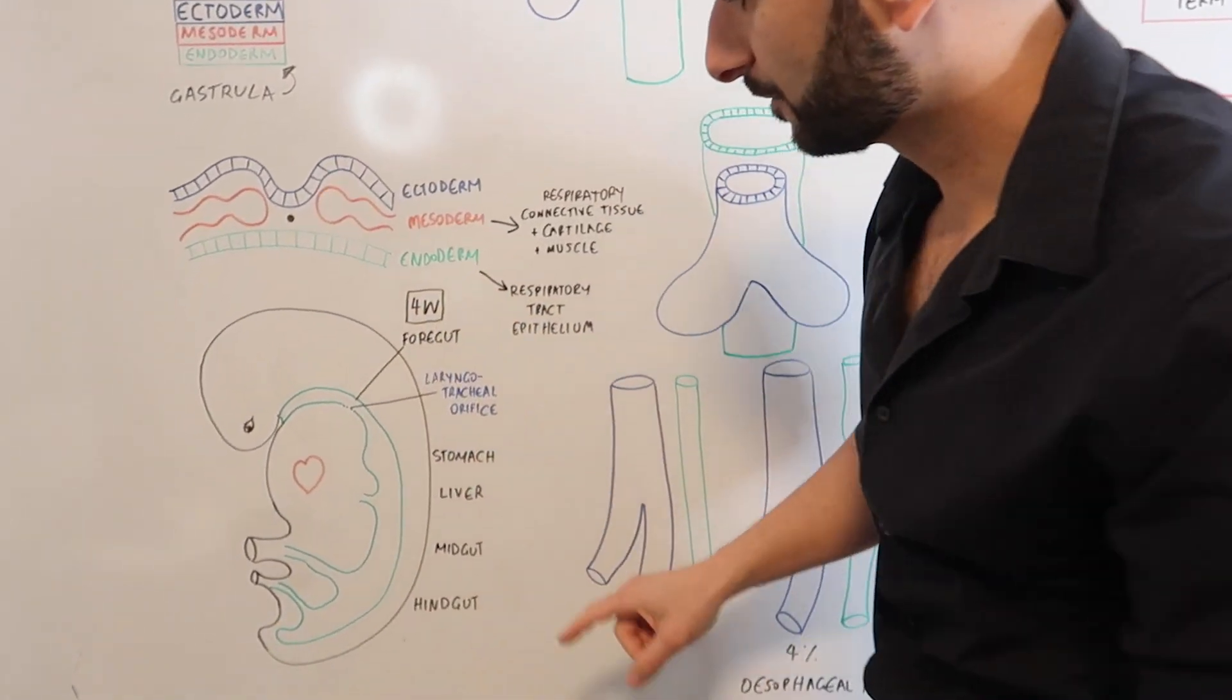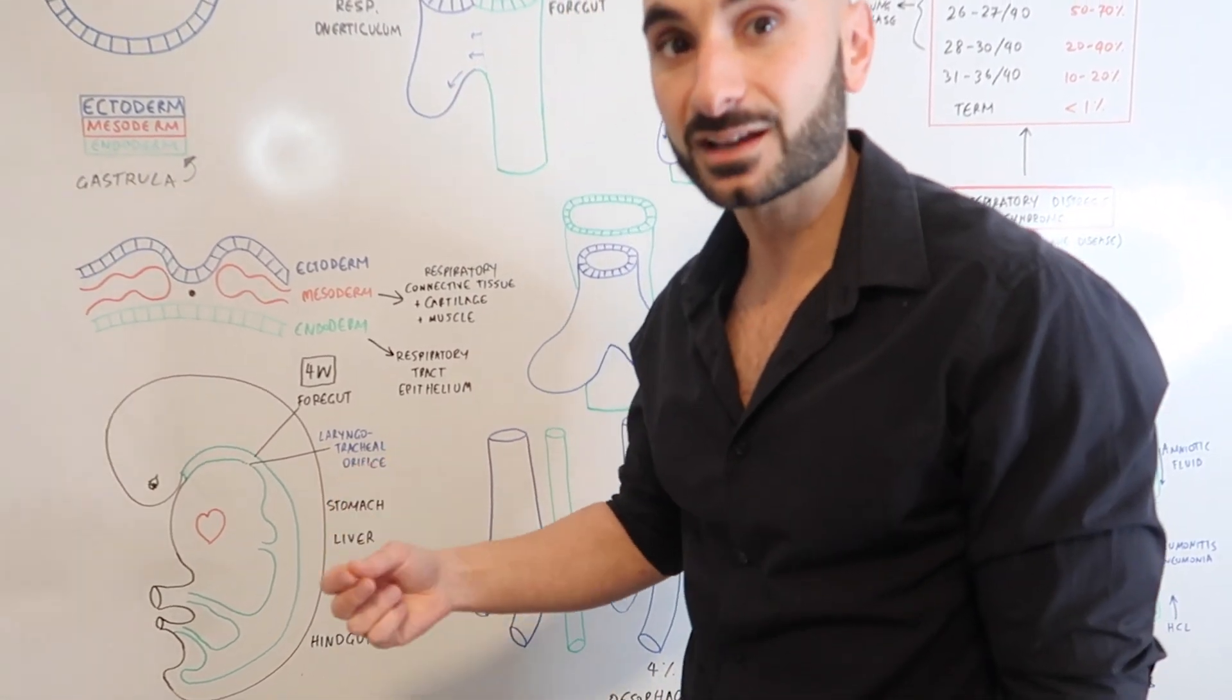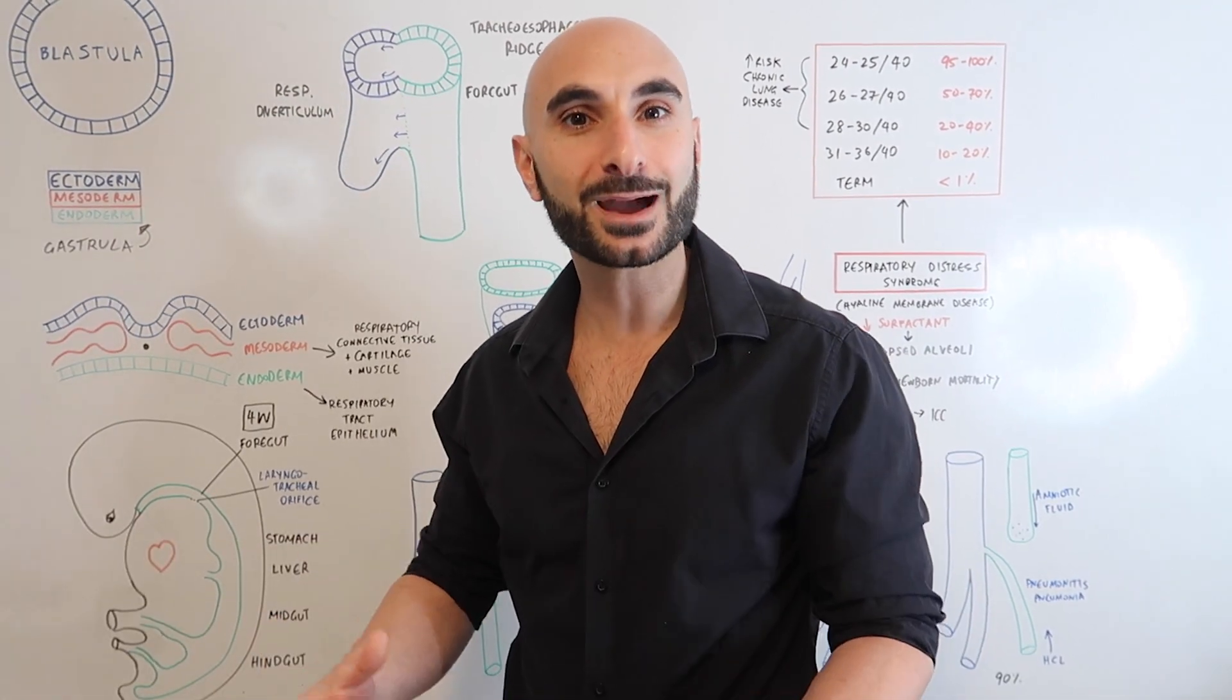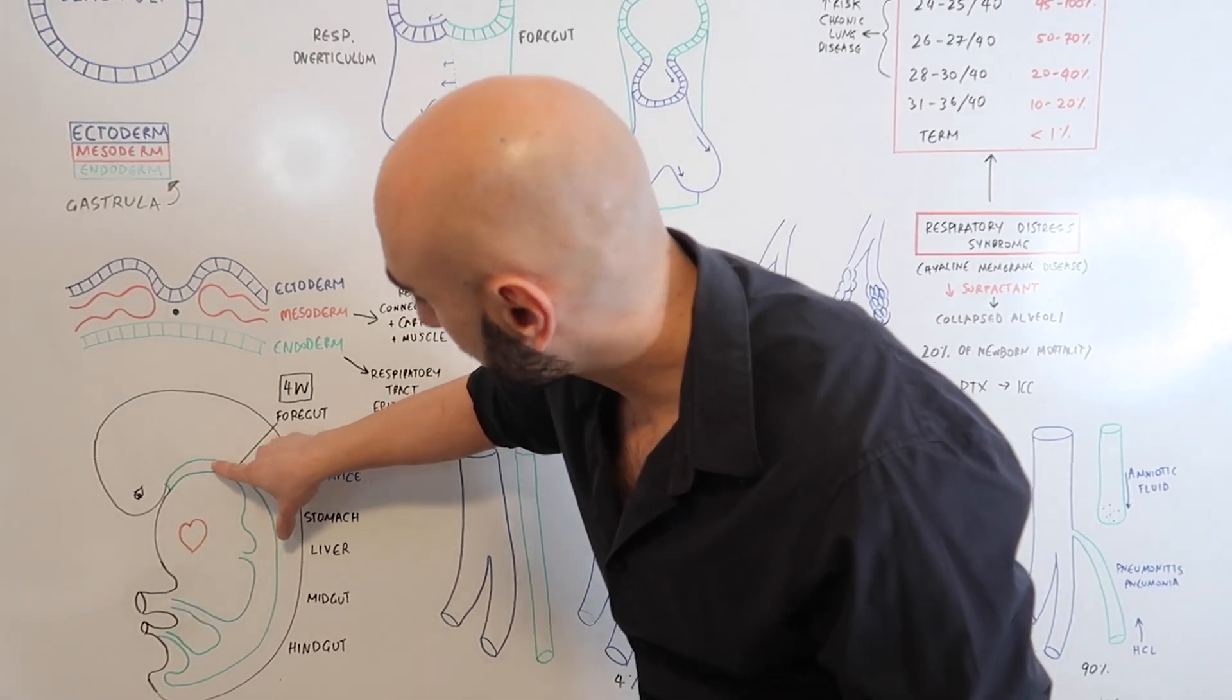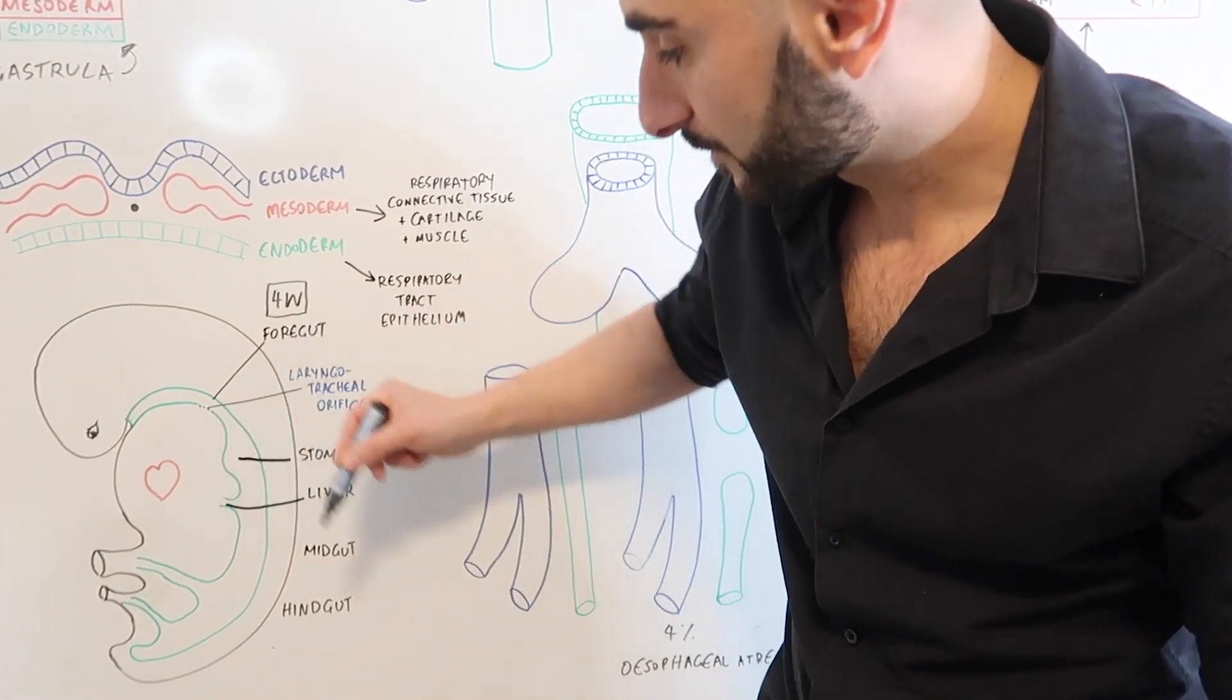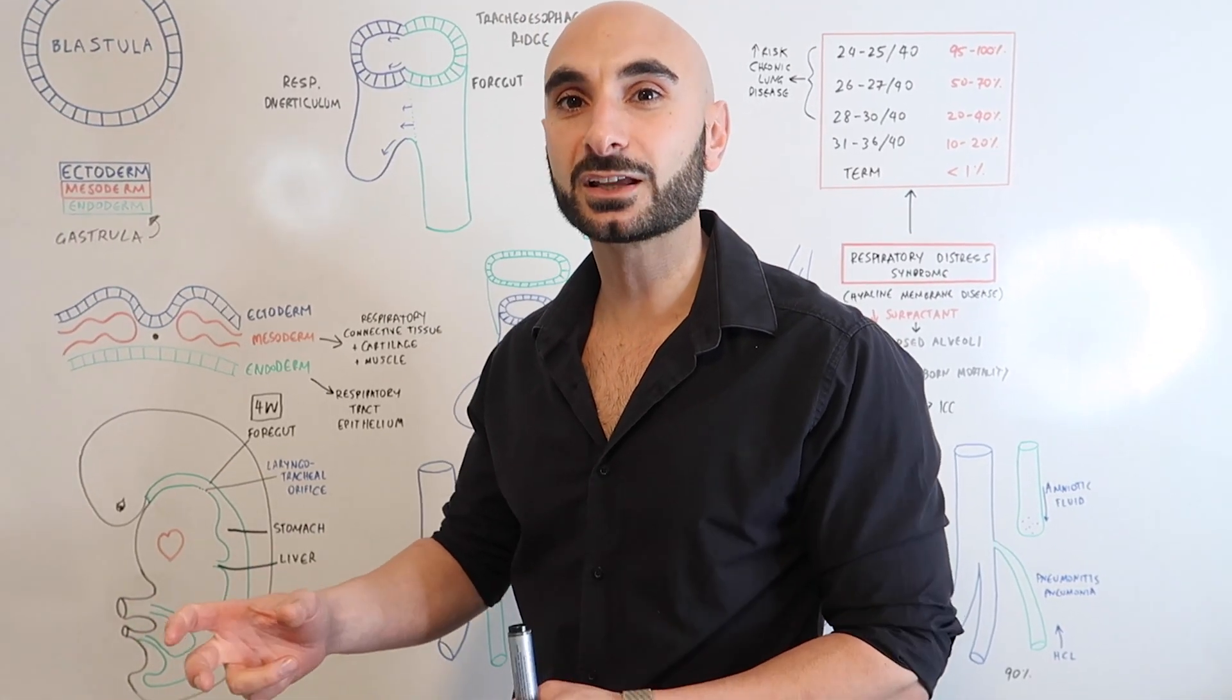Now pay attention to this image right here. Over here, we have a sagittal section of the embryo looking at it from the side. In green, it's color-coded to be the endoderm or the epithelial layer of the gastrointestinal tract. Right at the top here, we have the mouth or the stomodeum. And in a previous video, we spoke about how to quickly memorize stomodeum, meaning the mouth, because the mouth is the opening to the stomach and duodenum. The mouth leads down into the throat and this bit is the stomach here. The liver bud is derived from here. And then we have the midgut and then the hindgut, focusing over here at the laryngotracheal orifice. Larynx, trachea, hole. Laryngotracheal orifice.